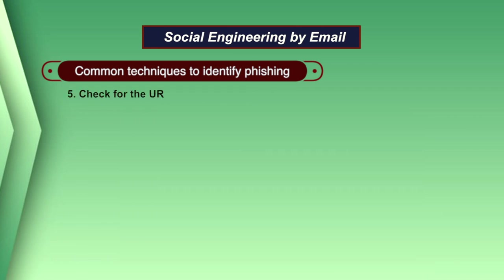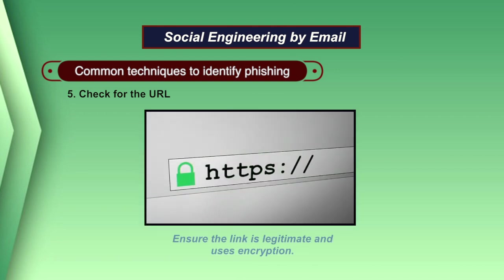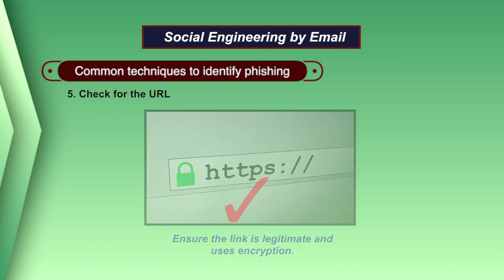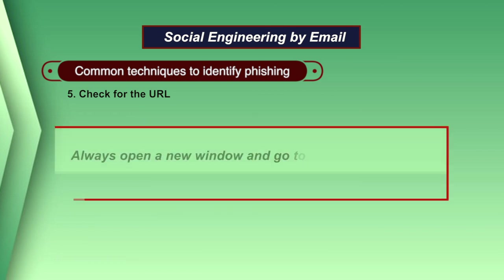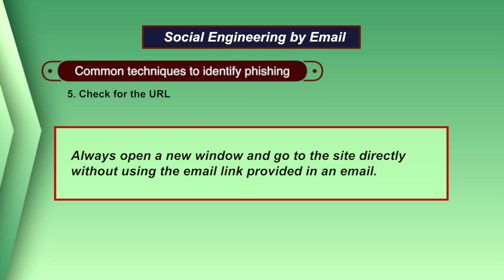Another technique to identify a phishing attack is to check the URL. Ensure the link is legitimate and uses encryption, which can be verified by looking at the HTTP protocol — secure sites use HTTPS. However, to be extra cautious, it is best practice to always open a new window and go to the site directly without using the email link provided.